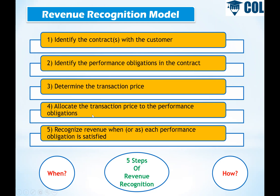There are three performance obligations: we sell a product, we provide a warranty, and we provide installation — this is the transaction price allocation step. Finally, Step 5 is revenue recognition: revenue will be recognized when the performance obligation is satisfied.